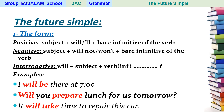Number two: 'Will you prepare lunch for us tomorrow?' This is a question form. We have the future 'will' plus the subject pronoun 'you' plus the verb in the infinitive 'prepare' plus the rest of the sentence plus question mark. In the interrogative form we have subject inversion.